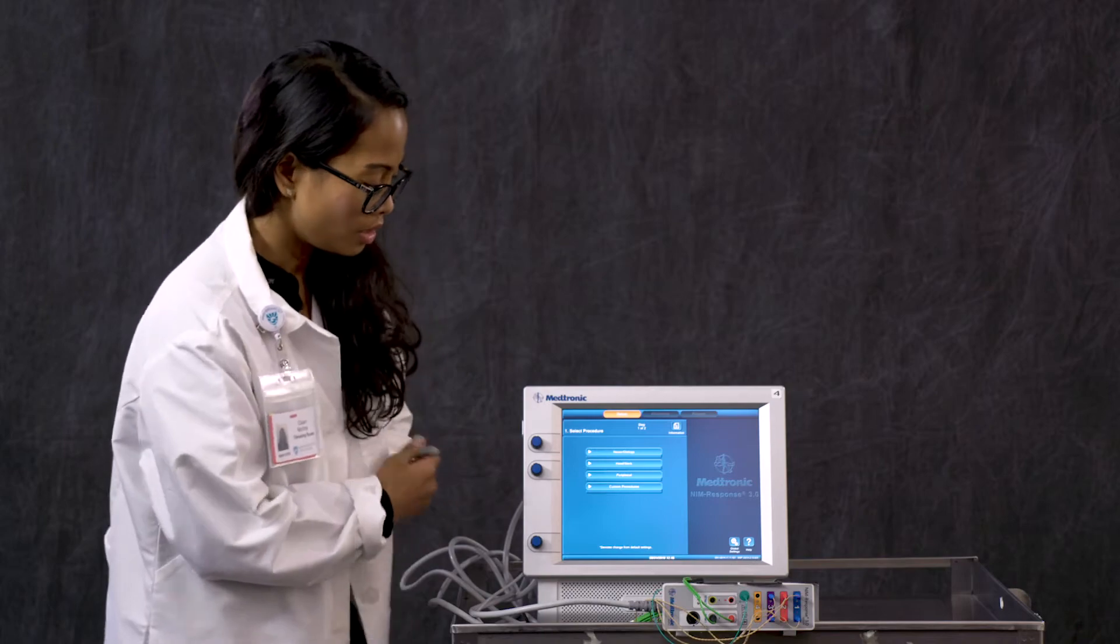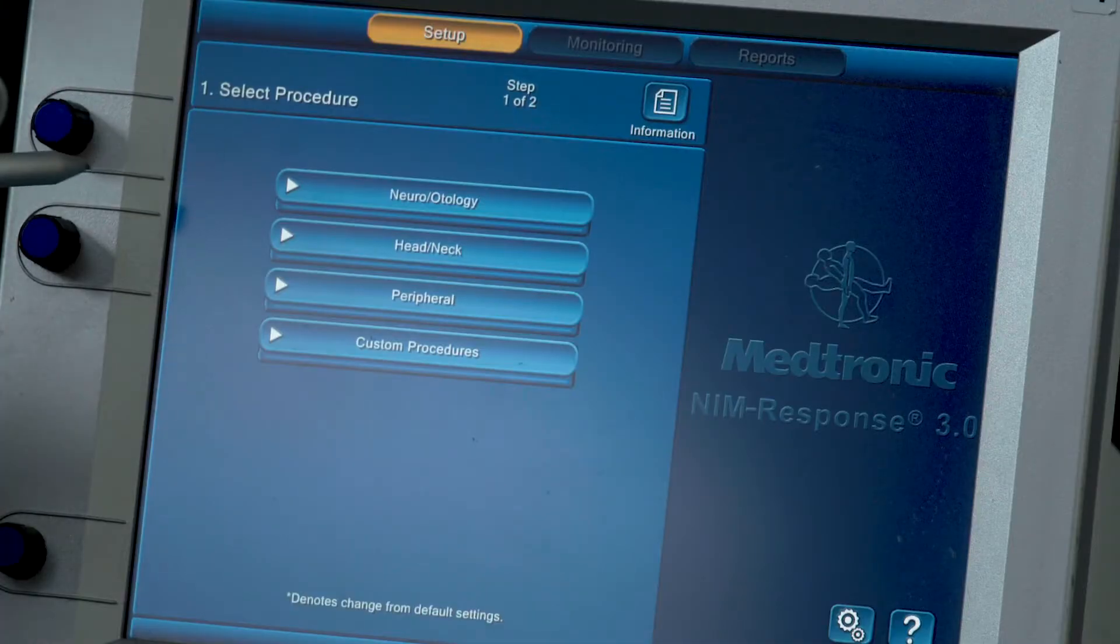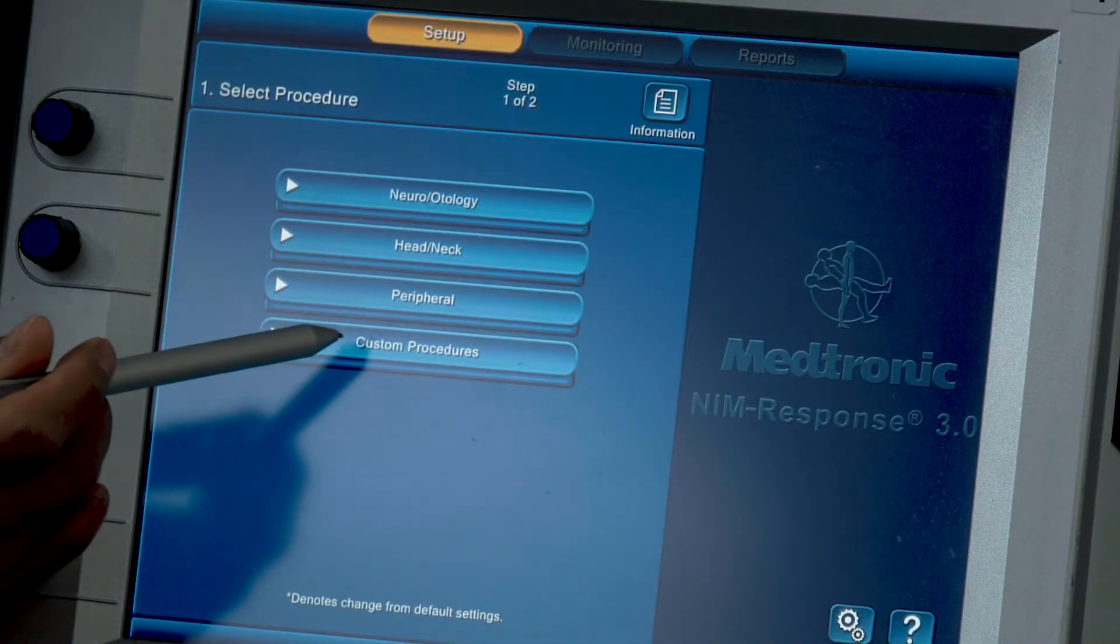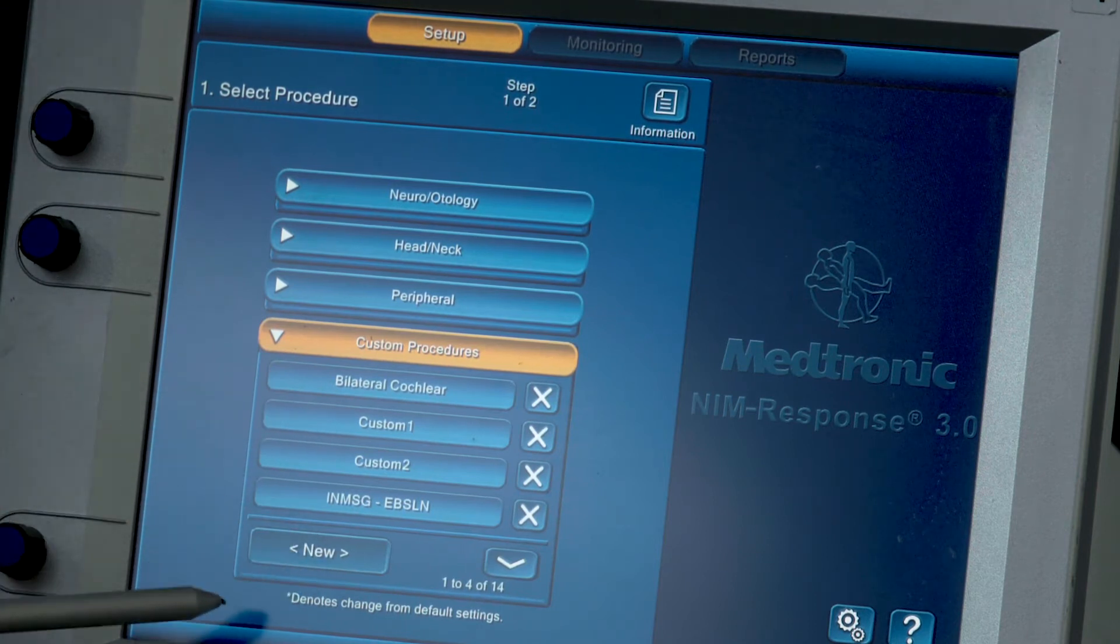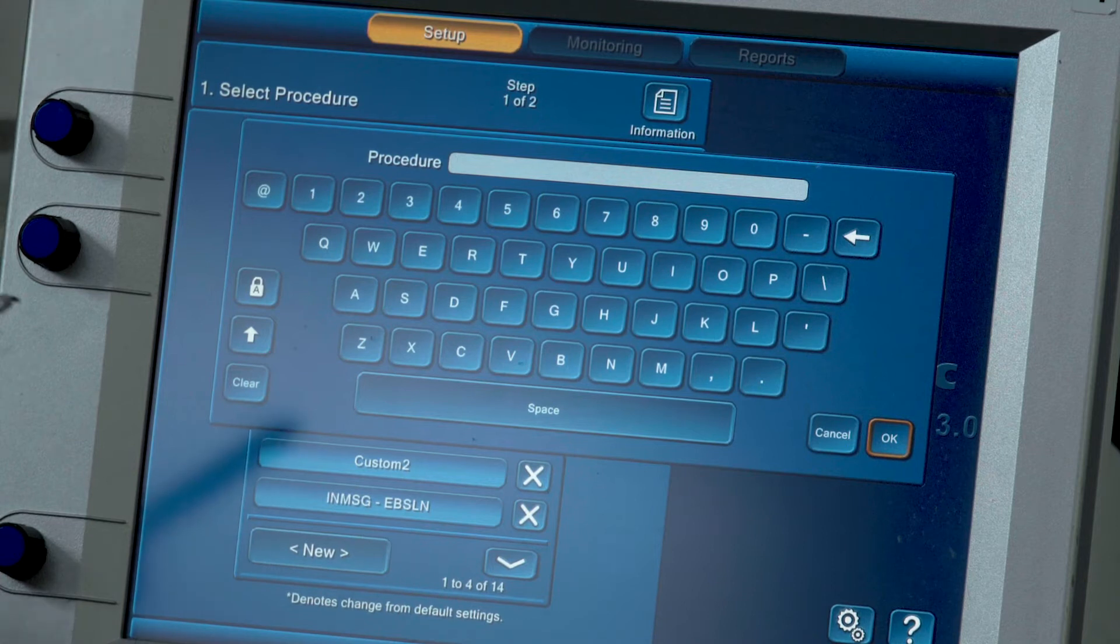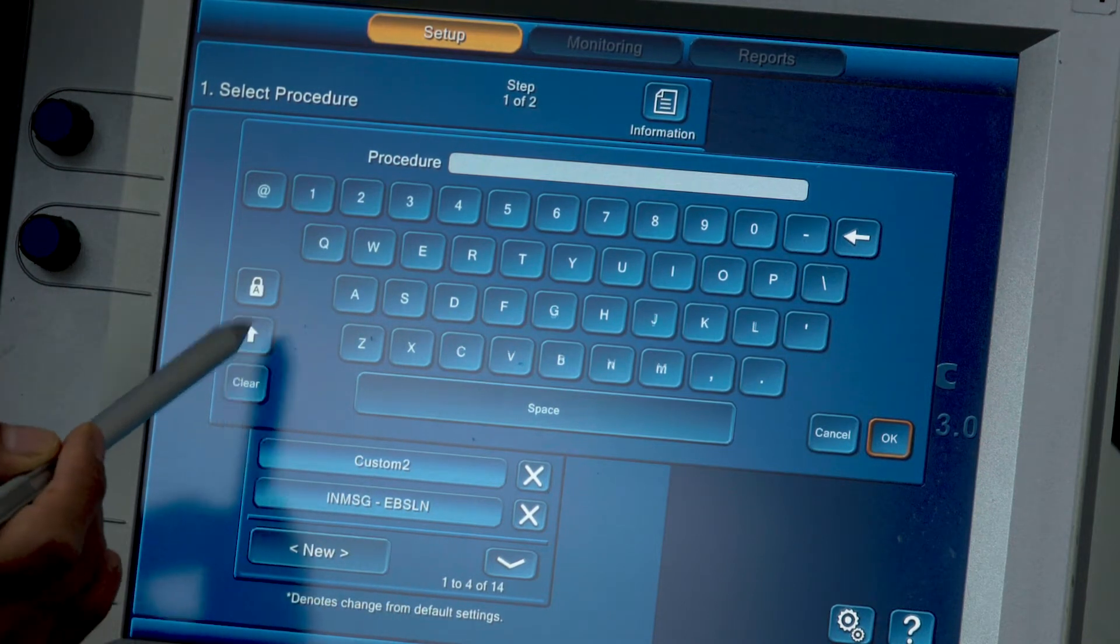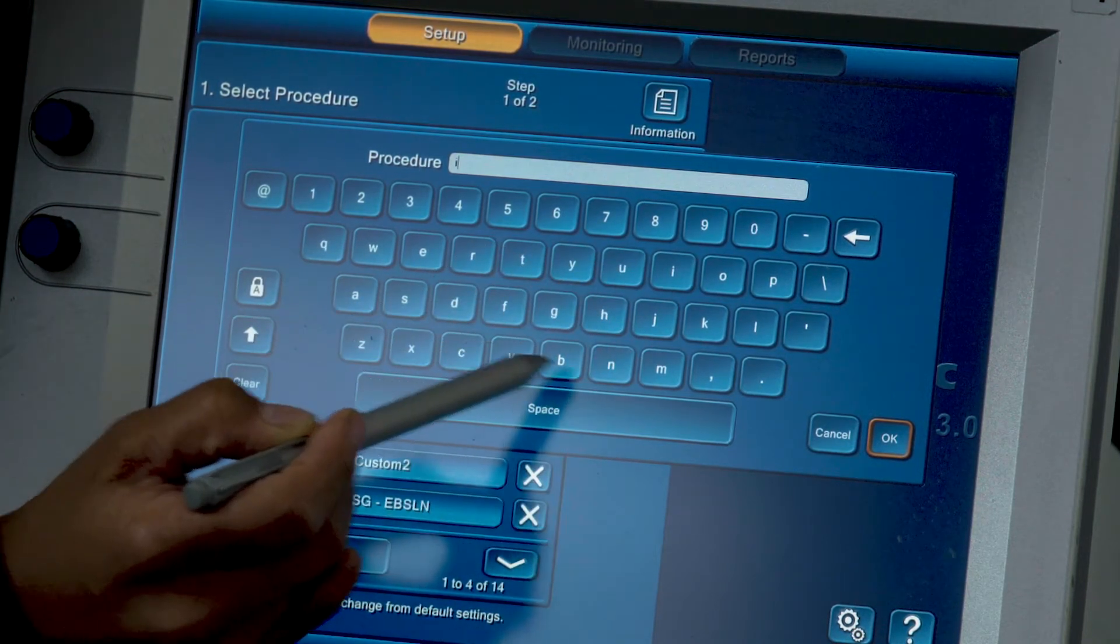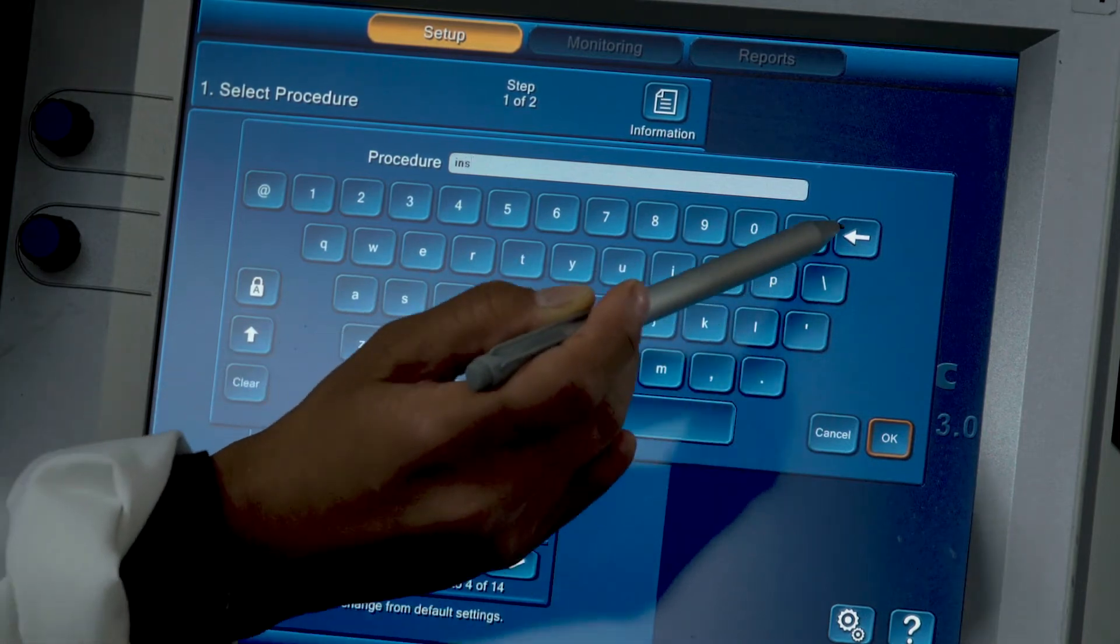So we have turned on our NIM and this is our main screen, the setup screen. Once you get to the setup screen, you are going to select a procedure. Here we are going to make a custom procedure. You're going to pick new, and let's say in this case we are going to call this Inspire Therapy. Press OK.